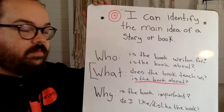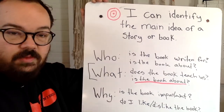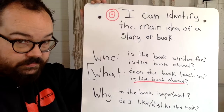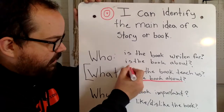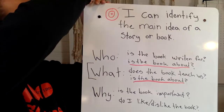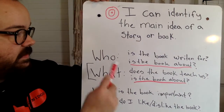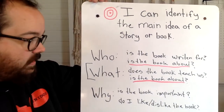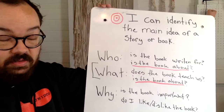So we're going to work on focusing on that in books, and we're going to ask three big questions: Who, what, and why? Who is the book written for? Who is the book about? It's really important when we're identifying the main idea. What does the book teach us? What is the book about? Why is the book important, or why isn't the book important? And why do I like or dislike the book or story?